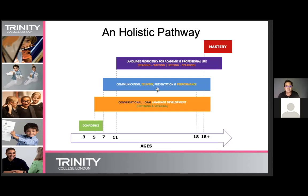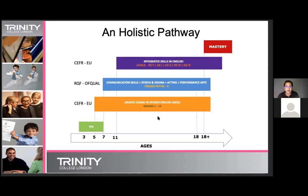When learners reach around age seven, they start expressing themselves artistically and creatively — identifying with media, film, and song. That's when we look at subjects involving communication, delivery, presentation, and performance. From about age eleven or twelve onwards, we prepare young people — assuming they've built up these skill sets — to get ready for their academic or professional future, which involves harnessing all four key areas: reading, writing, listening, and speaking.